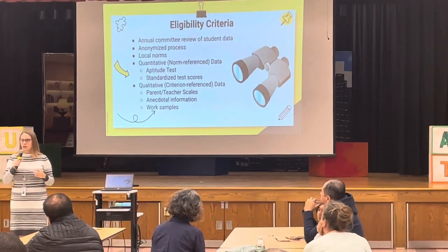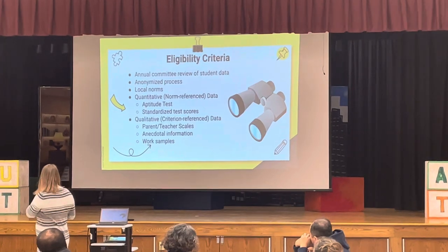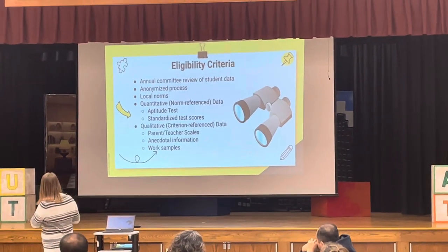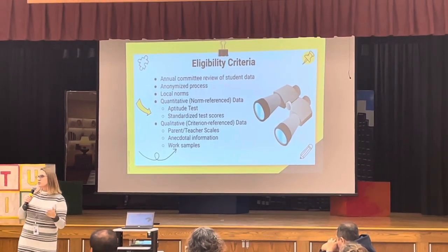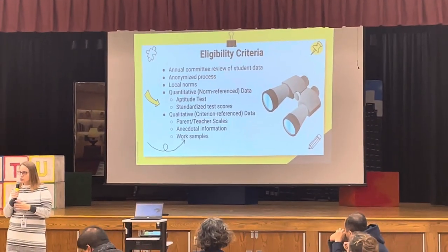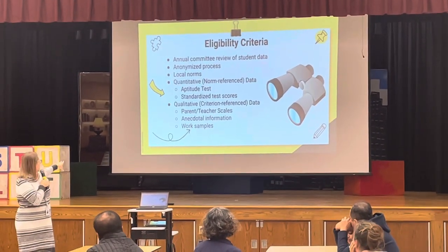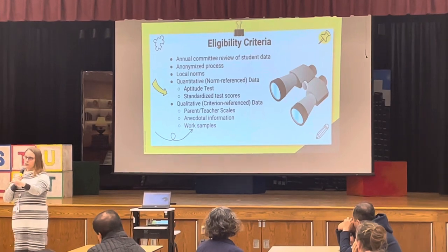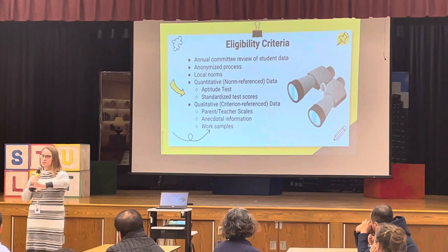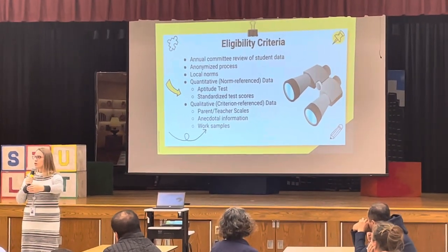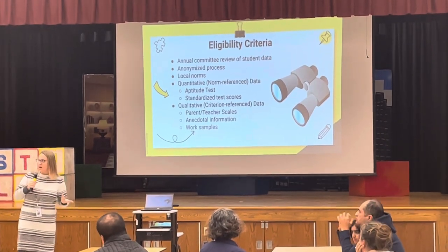We also give a creativity test, which measures divergent thinking, before we identify students. Then there's qualitative data, which is criterion-referenced. Norm-referenced is when you're comparing students against other students. Criterion-referenced, or qualitative data, is when you're comparing that student against himself — looking for evidence of growth in school, or perhaps stagnation.